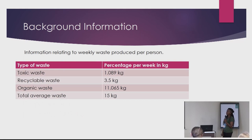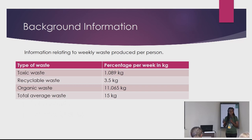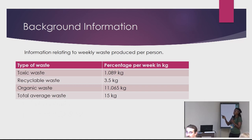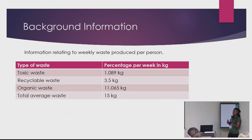We have information relating to weekly waste produced per person. Today is not about maps — it's just data. The types of waste we deal with in households include toxic waste, recyclable waste, and organic waste. In our informal settlement, toxic waste produced per week is 1.089 kg, recyclable waste is 3.5 kg, organic waste is 11.065 kg, and the total average waste for one family per week is 15 kg.